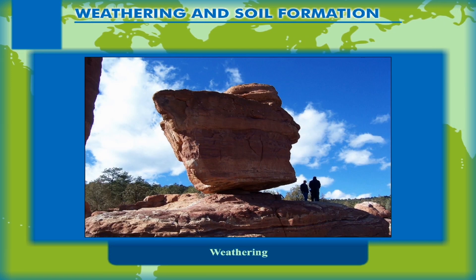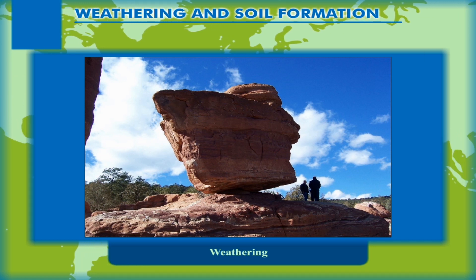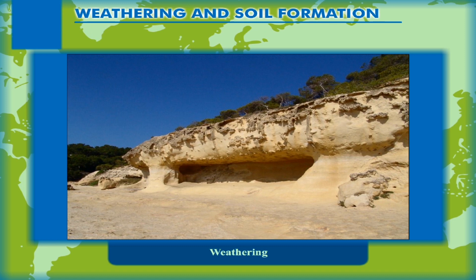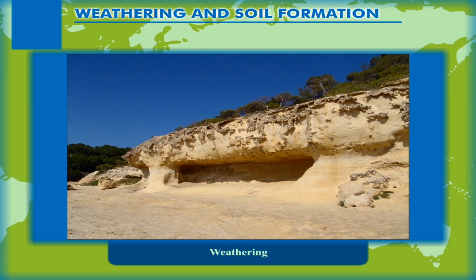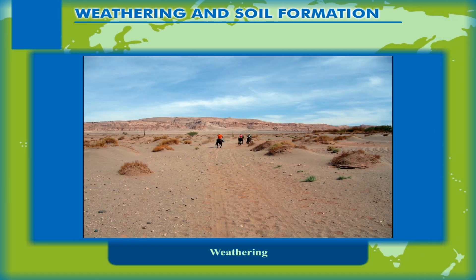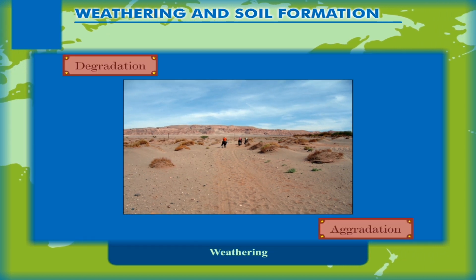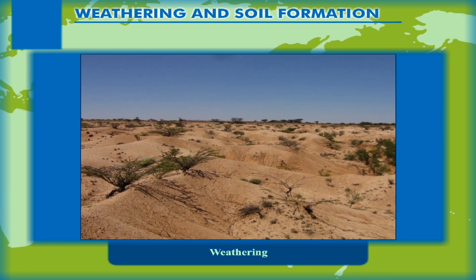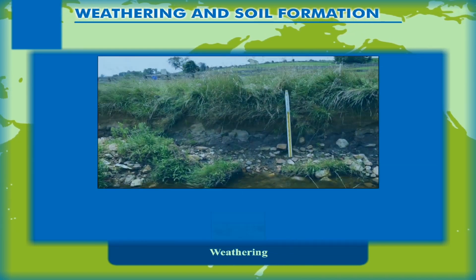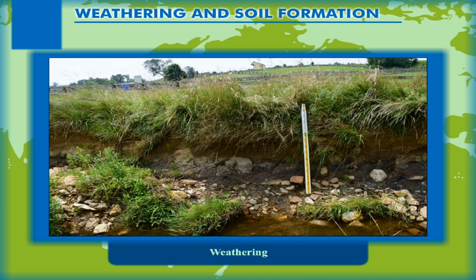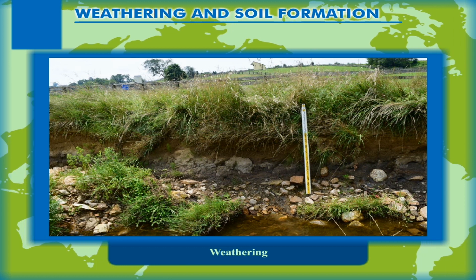Weathering is an exogenetic force responsible for changing the face of the earth. Weathering and erosion, which together are known as denudation, are the forces involved in the process of earth's gradation. Gradation or the process of leveling of the earth takes place through degradation and aggradation. Degradation is the lowering of the earth's surface through weathering and removal of the weathered material. Aggradation is the process by which the level of the land surface is raised through the deposition of the eroded material.